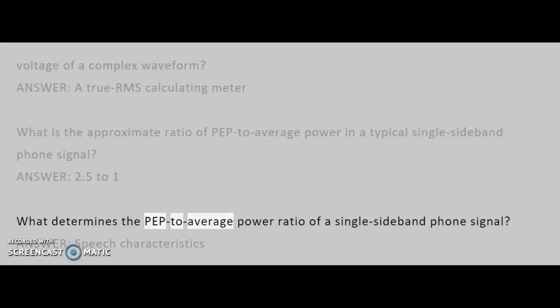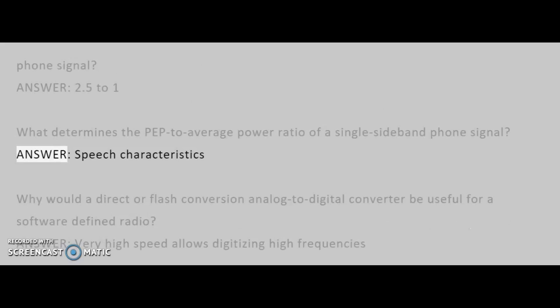What determines the PEP to average power ratio of a single sideband phone signal? Answer: Speech characteristics.